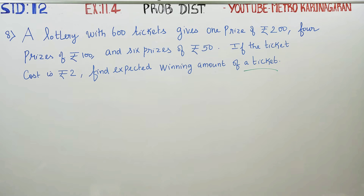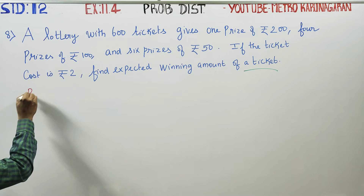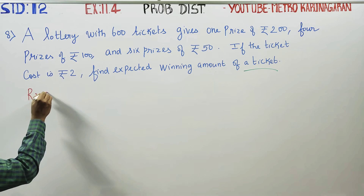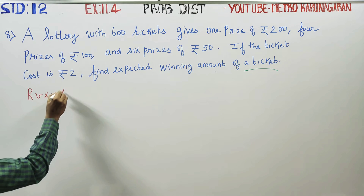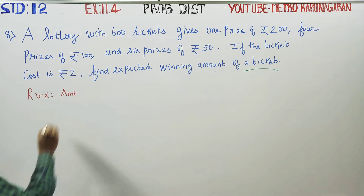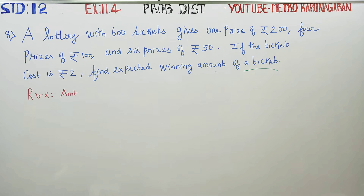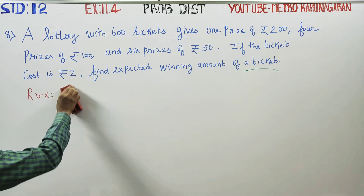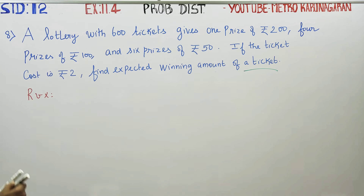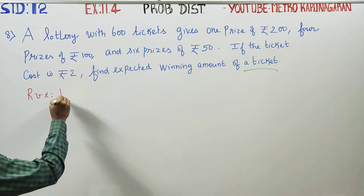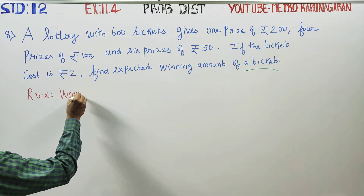We have 600 tickets and these prizes. Let random variable X represent the winning amount — the amount you win in the lottery.